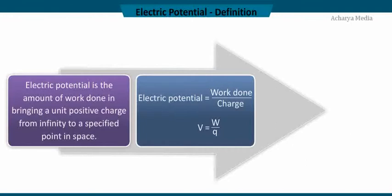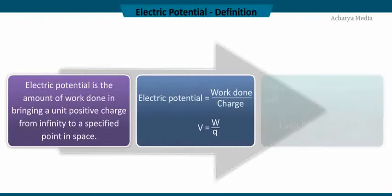The unit of electric potential is volt. Electric potential is 1 volt if 1 joule of work is done in moving a unit positive charge of 1 coulomb. It is represented as 1 volt is equal to 1 joule per 1 coulomb.